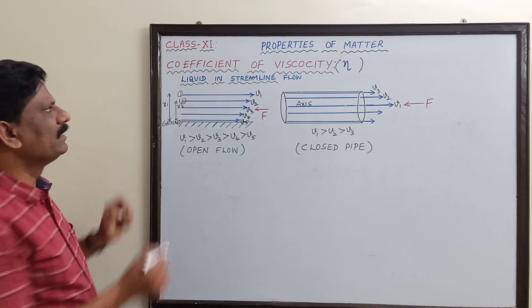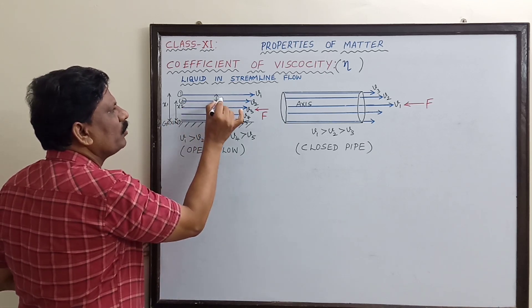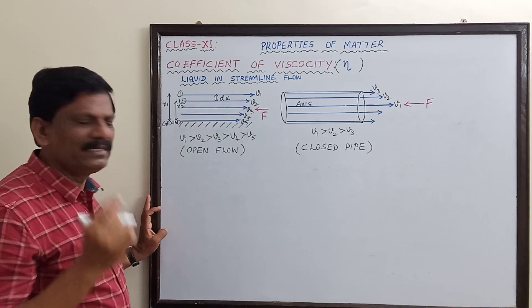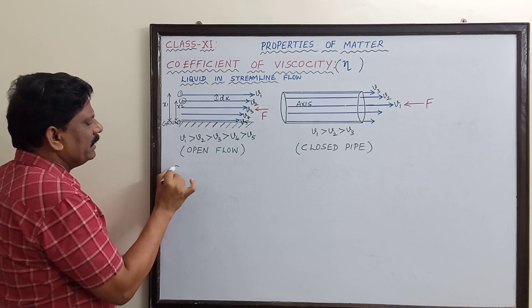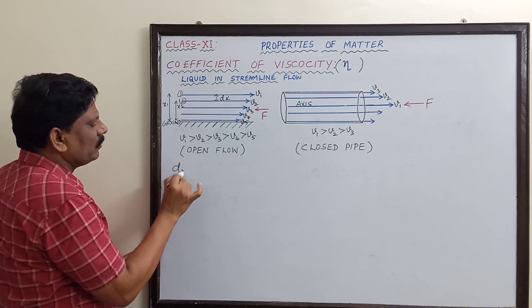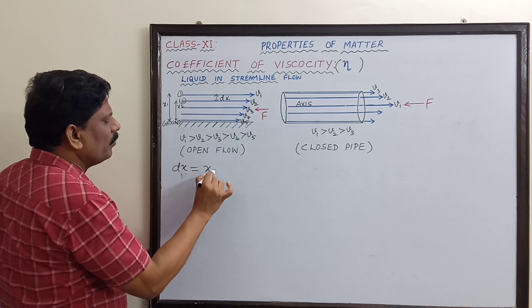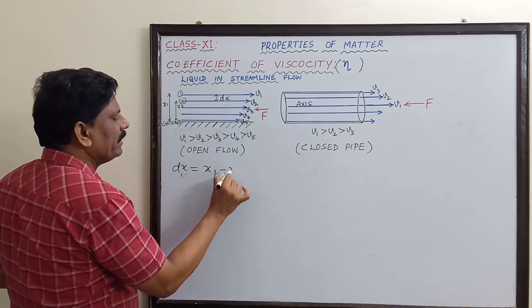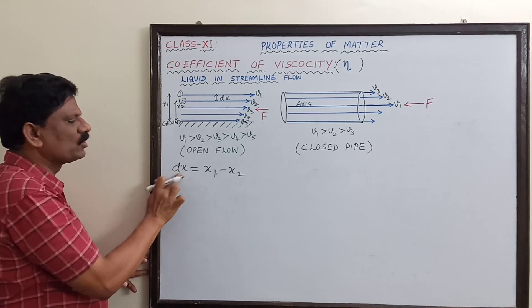What is the distance of separation between these two layers? It is dx — they are very close. So dx equals x2 minus x1, or x1 minus x2. Here x1 is larger and x2 is lesser, so we take x1 minus x2.